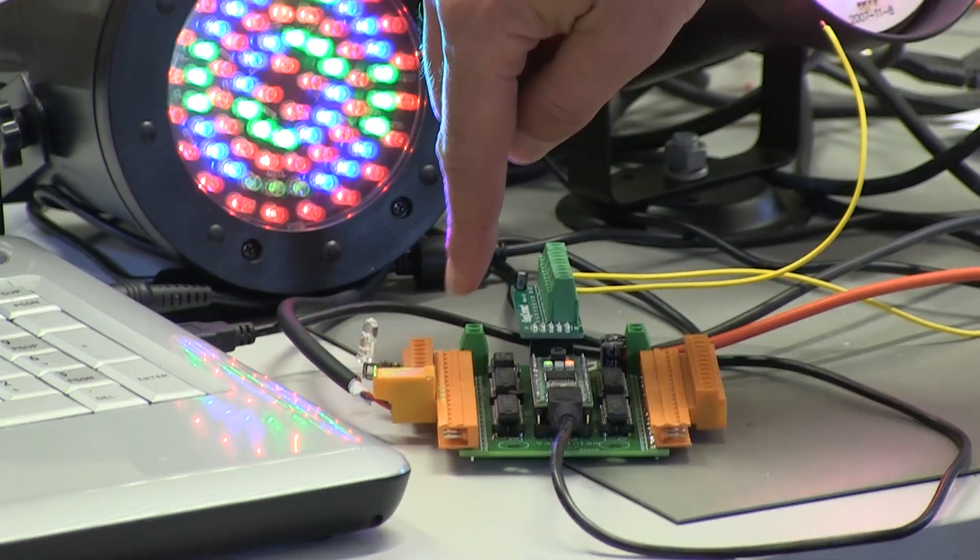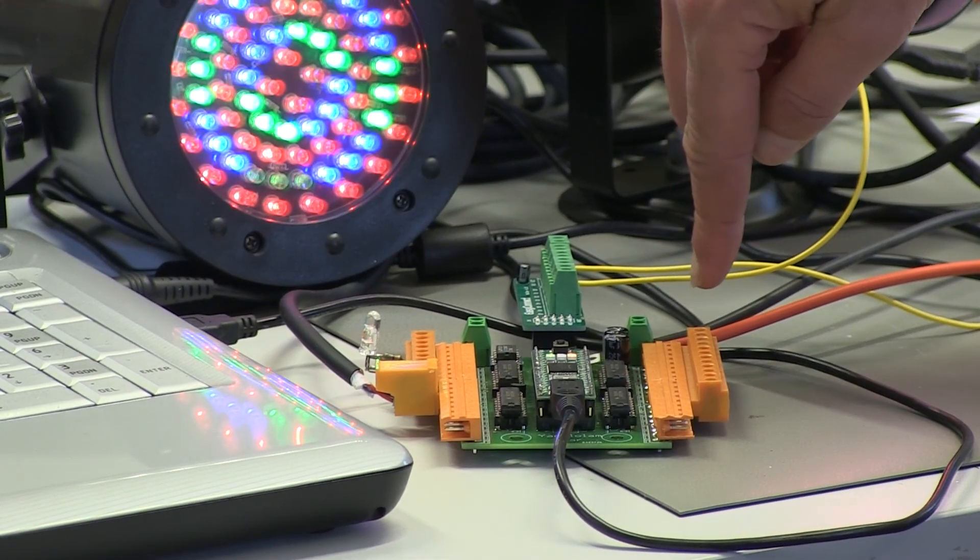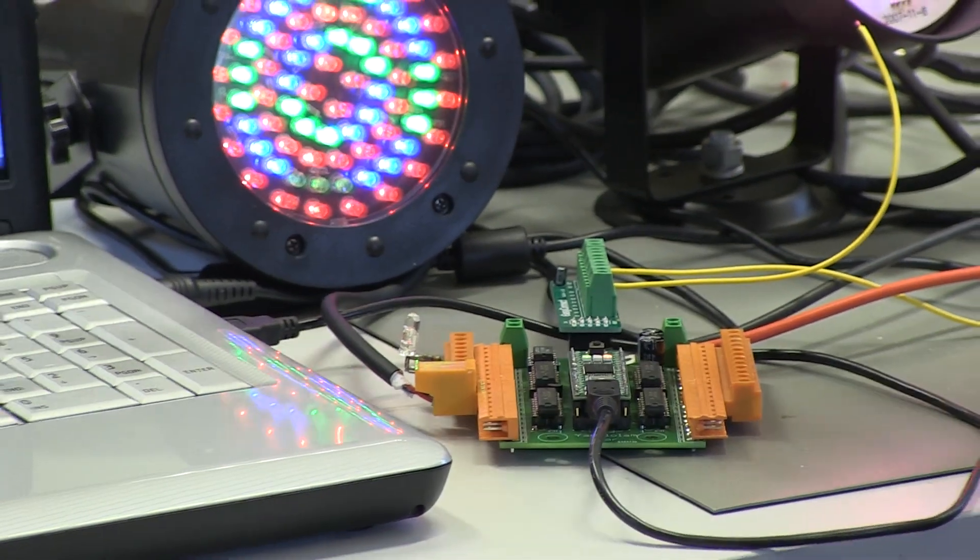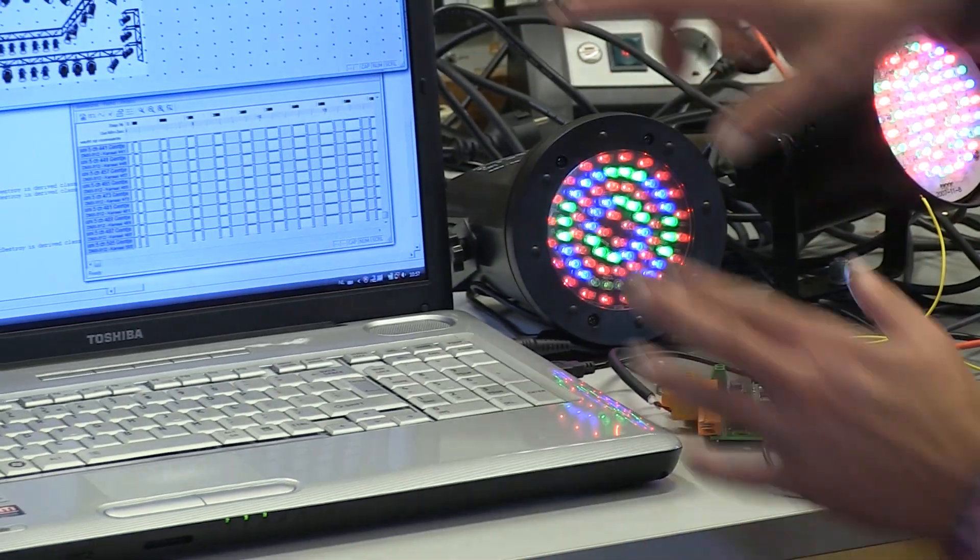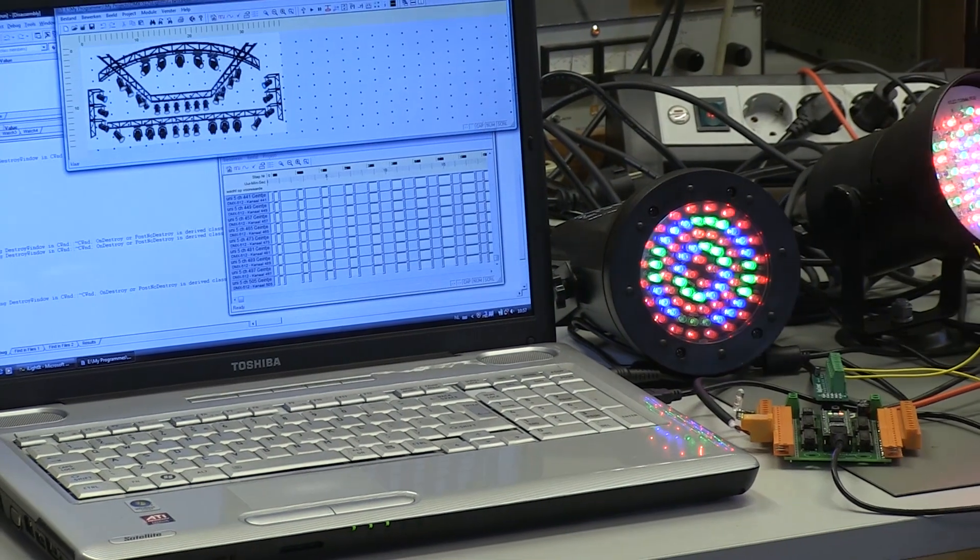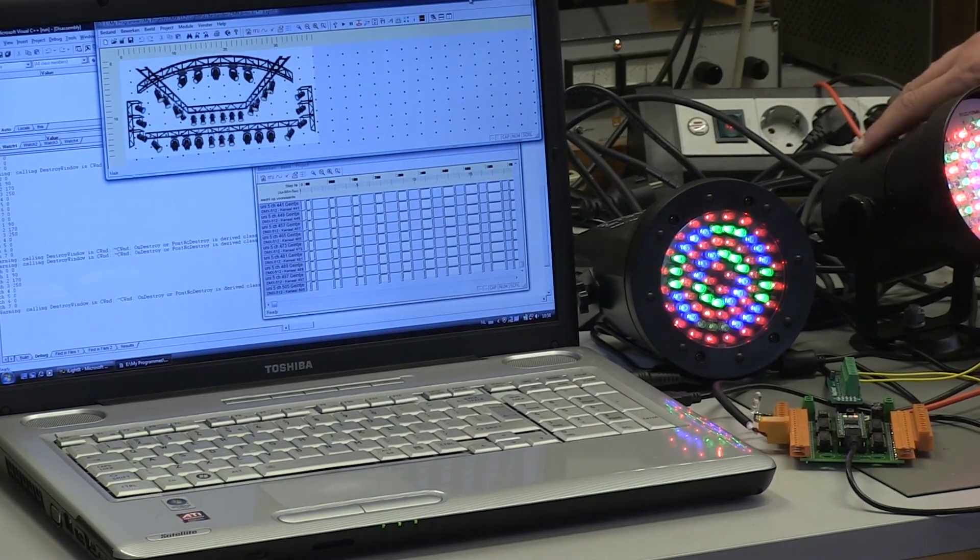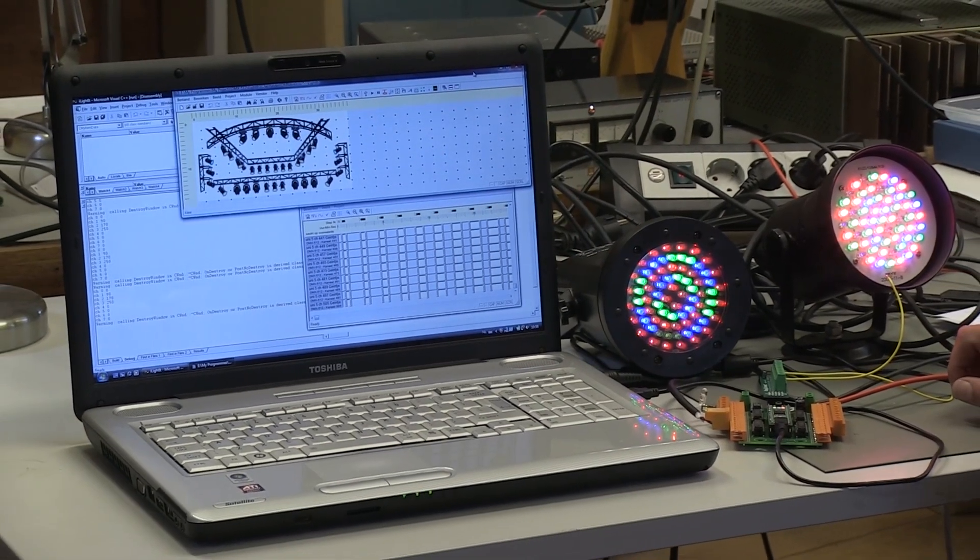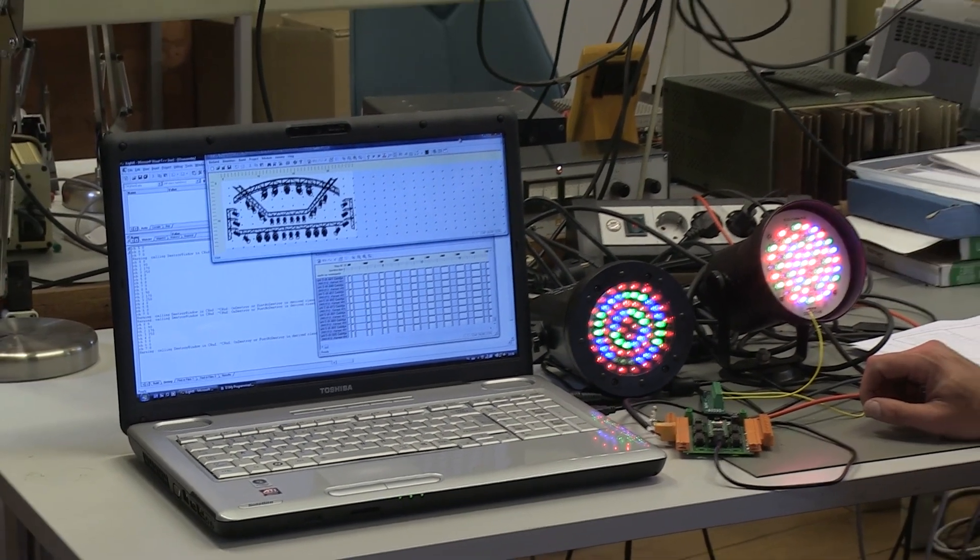You can see here eight outputs and here eight outputs and I have made some software over here where you can send information from the computer to the DMX fixtures. The special thing is that it has 16 outputs. Can you say something more about that? Why is it special?